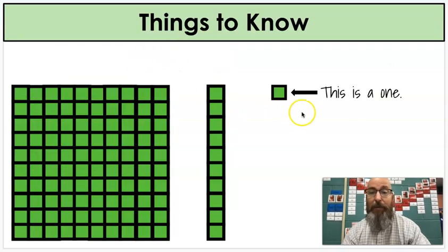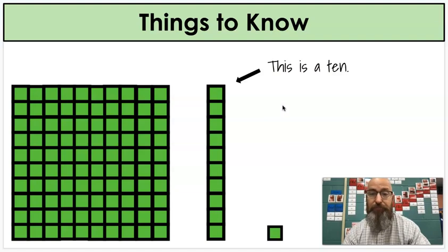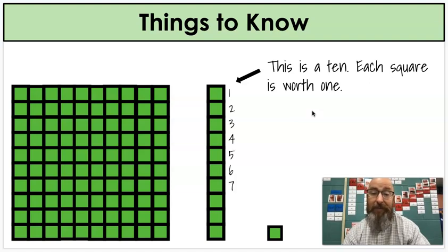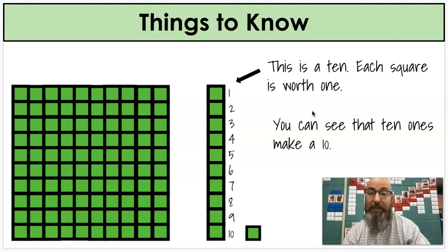All right, so this is a one. That little bitty square right there is a one. And ten ones make a ten. This is a ten. And each square in that ten is worth one, and we can count those real easy. Count those with me. One, two, three, four, five, six, seven, eight, nine, ten. So we see that ten ones make a ten.